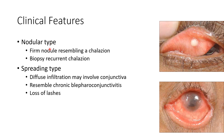Coming to the clinical features of sebaceous gland carcinoma, there are two types: nodular type and spreading type. In the nodular type, there will be a firm nodule resembling a chalazion, as you can see in this picture. This is the reason why we have to biopsy cases of recurrent chalazion.